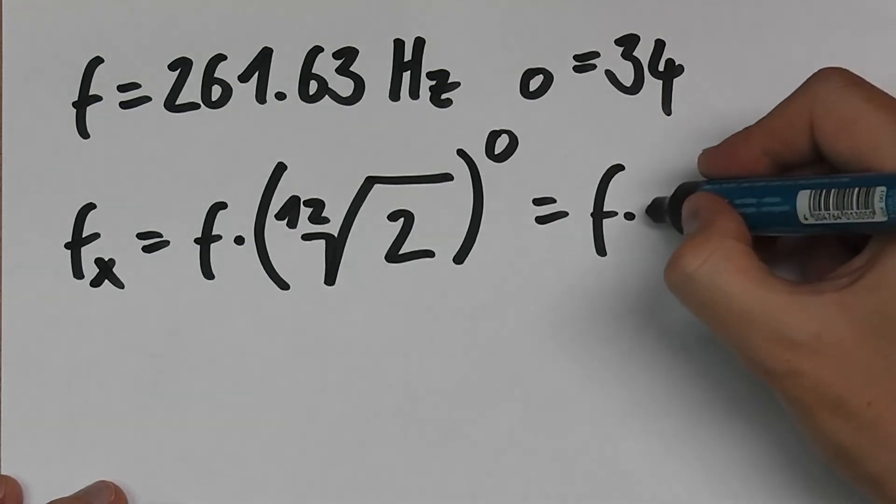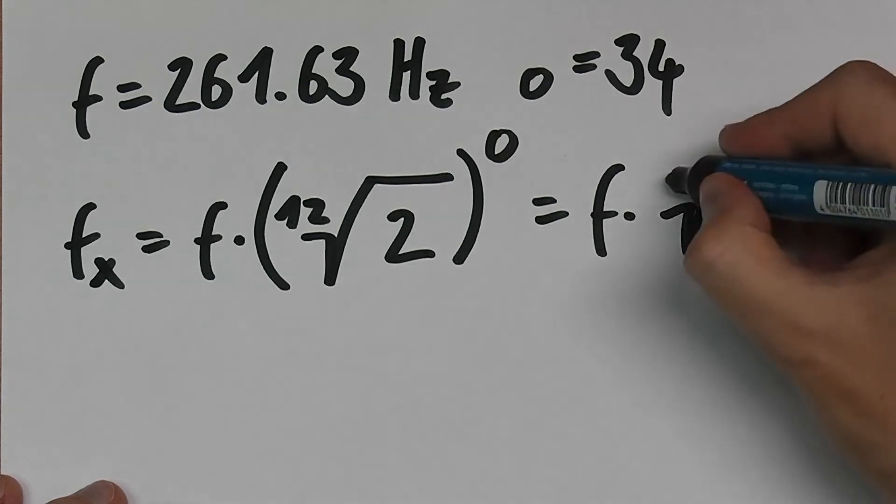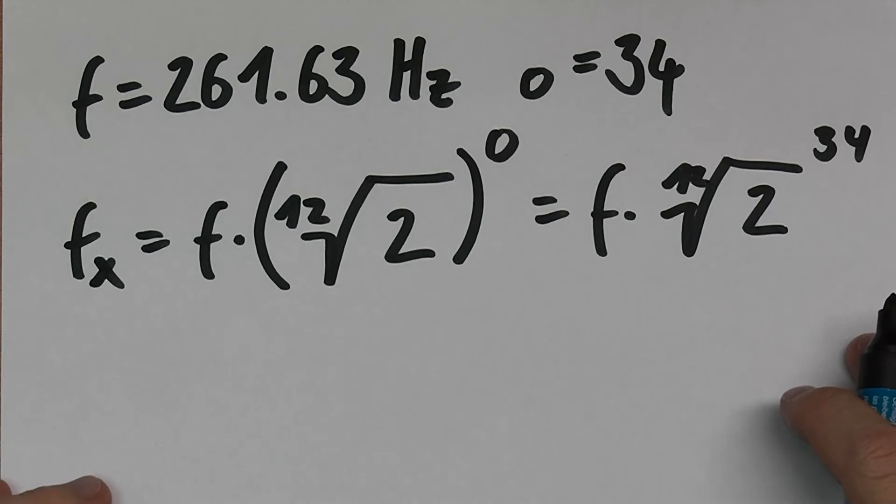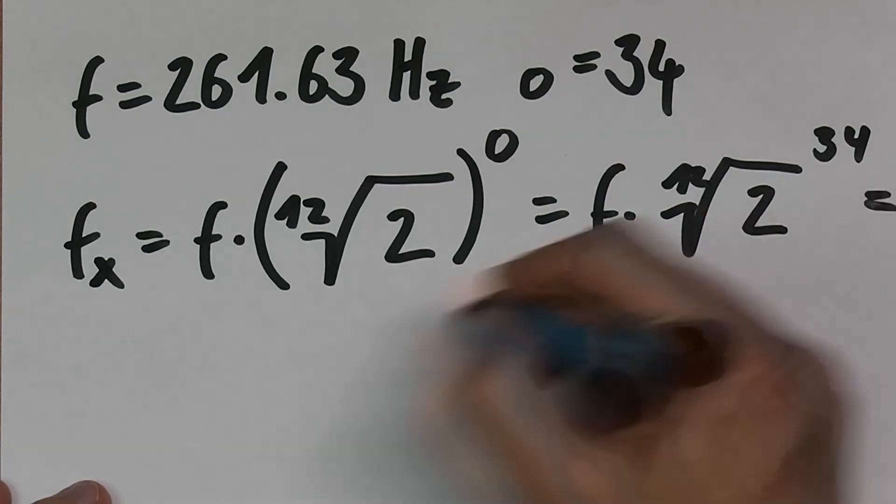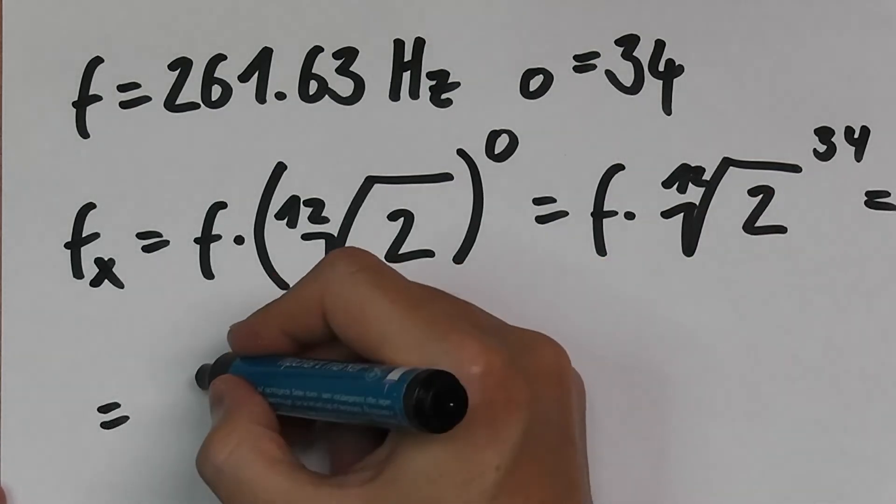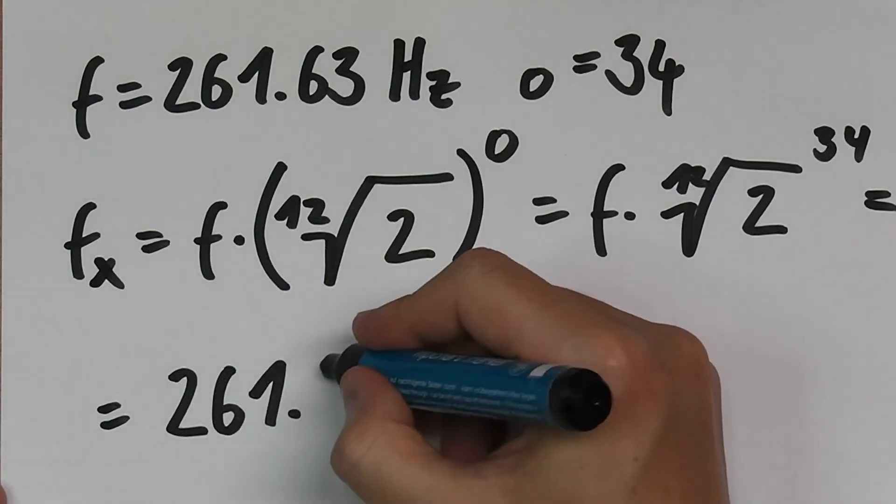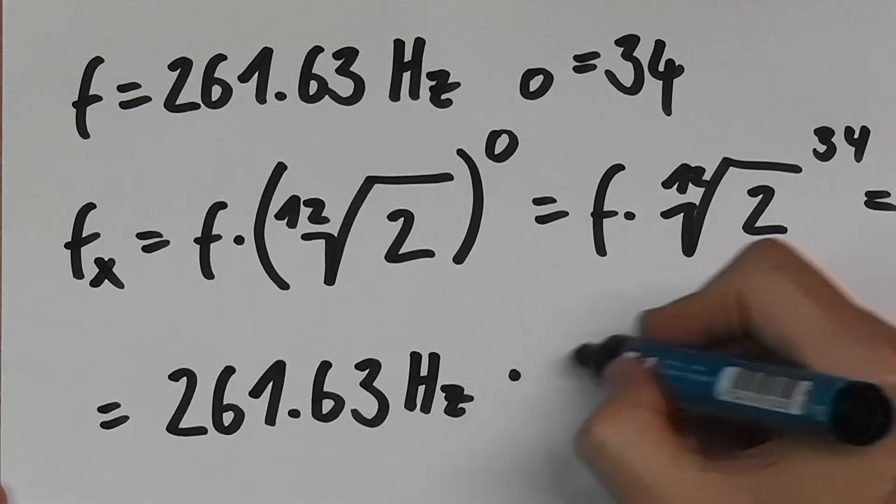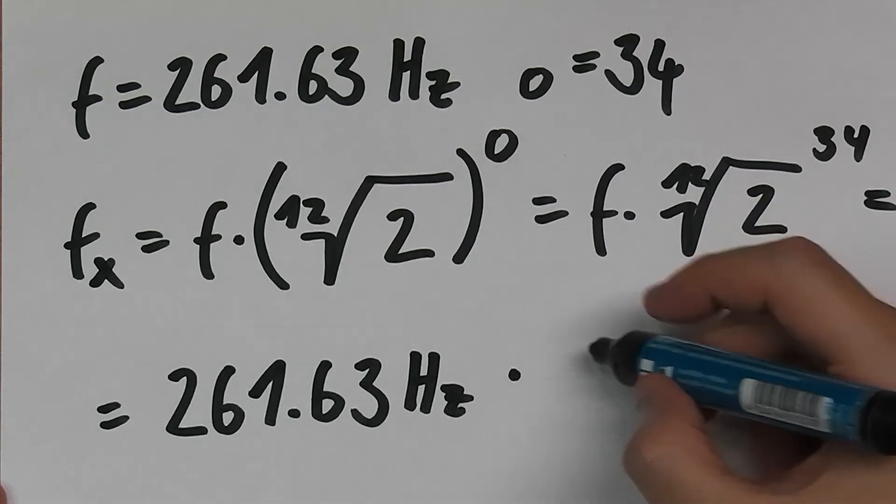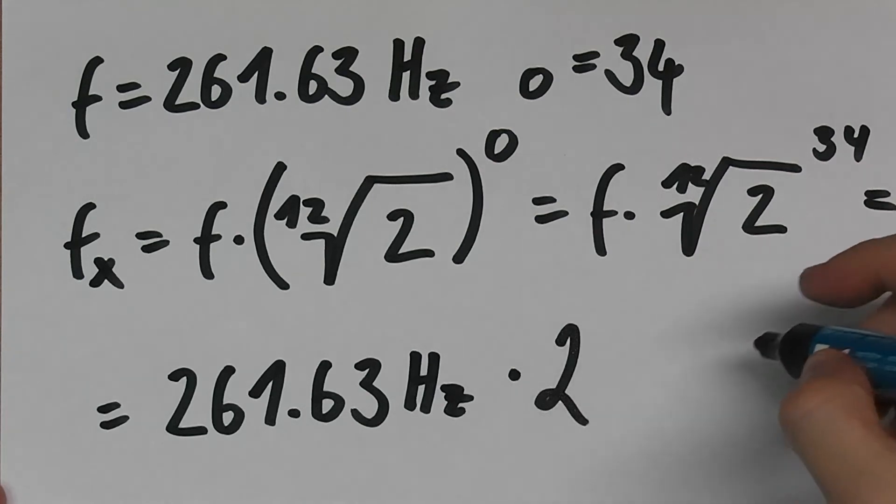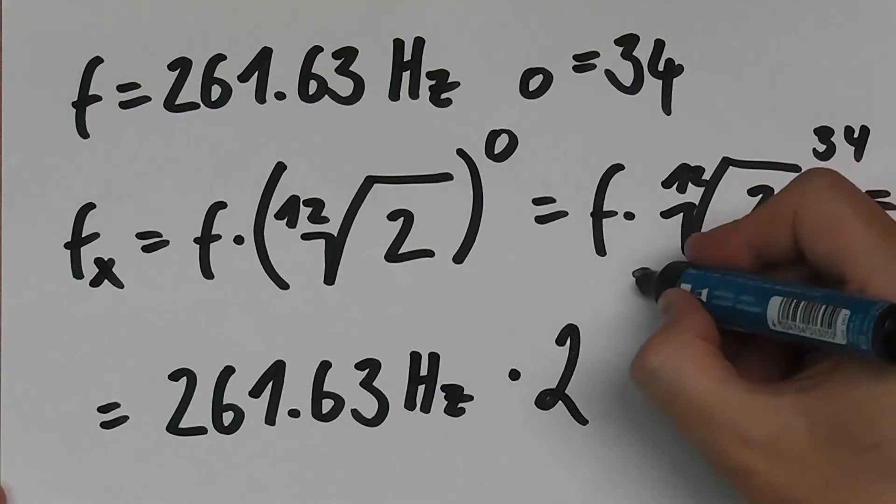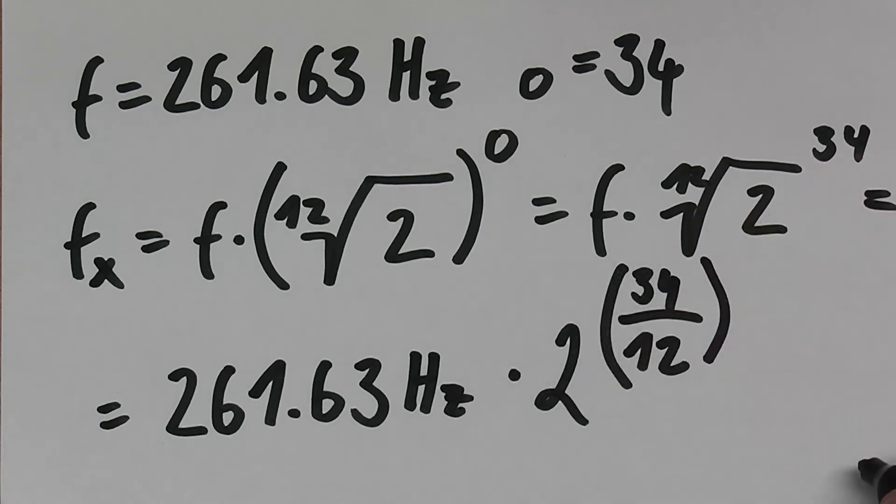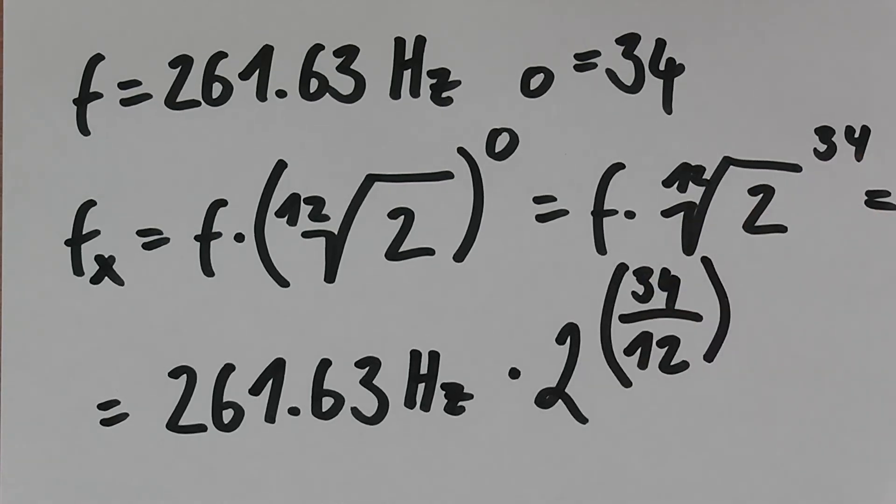If we're calculating that, we take 261.63, and we can write that a little bit differently: times 2 to the power of 34 divided by 12.